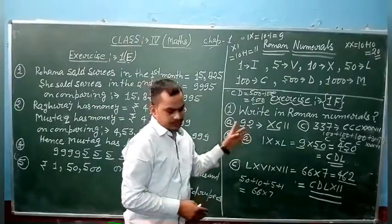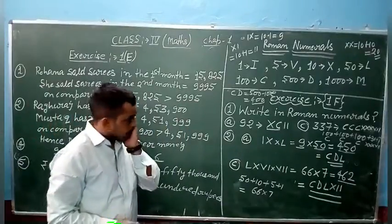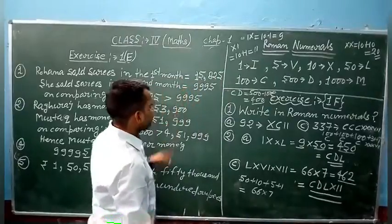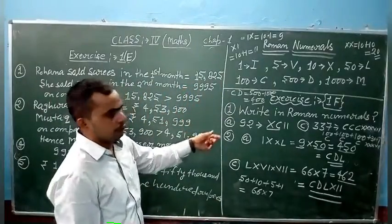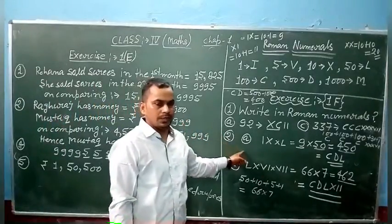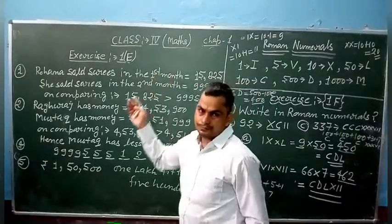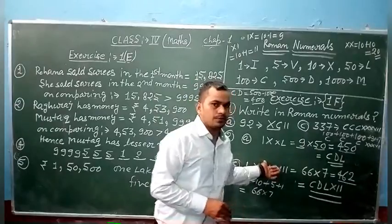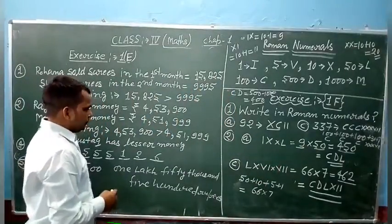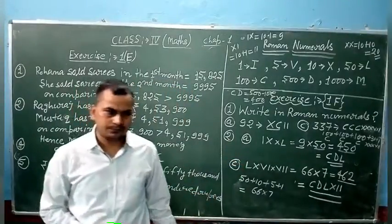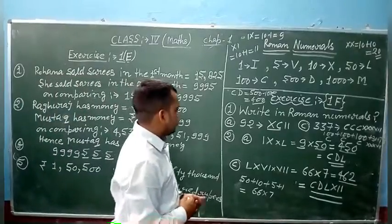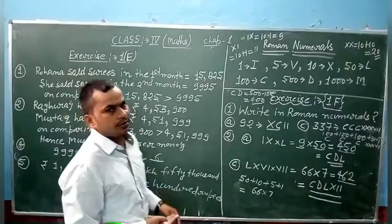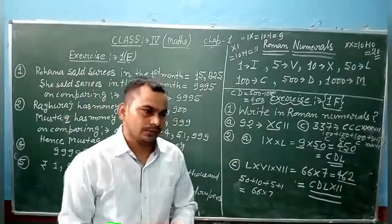We can write the numbers according to the rules of the Roman numerals. These are the basic symbols of Roman numerals. So this is the basic one. Let's revise once again regarding Roman numerals. I hope the students, we have completed chapter 1.